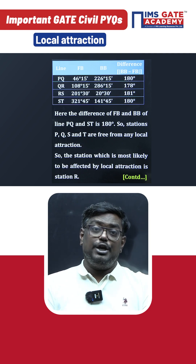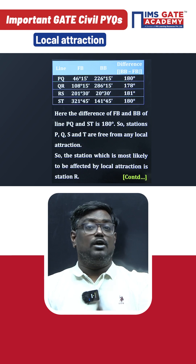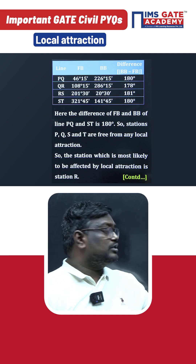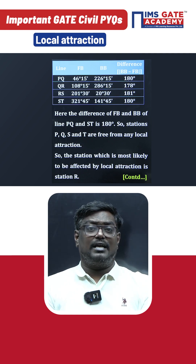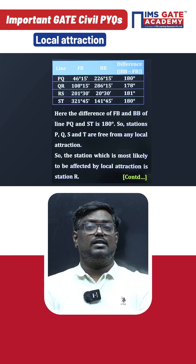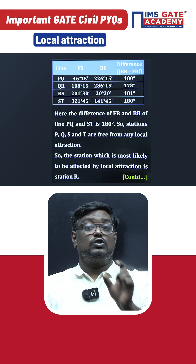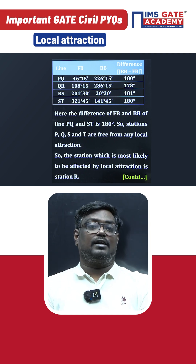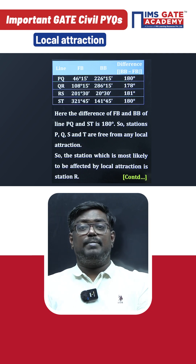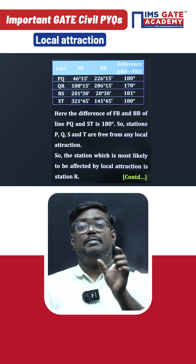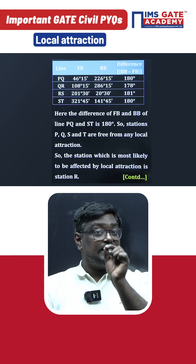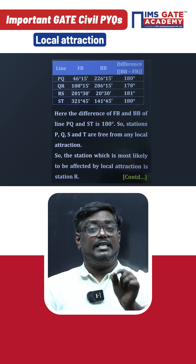But we already know that Q is not affected, so station R is the only one affected. Similarly, for stations RS, the back bearing of RS minus fore bearing of RS is not equal to 180°, so stations R and S can be affected. But for ST, the back bearing of ST minus fore bearing of ST is equal to 180°, so stations S and T are not affected.